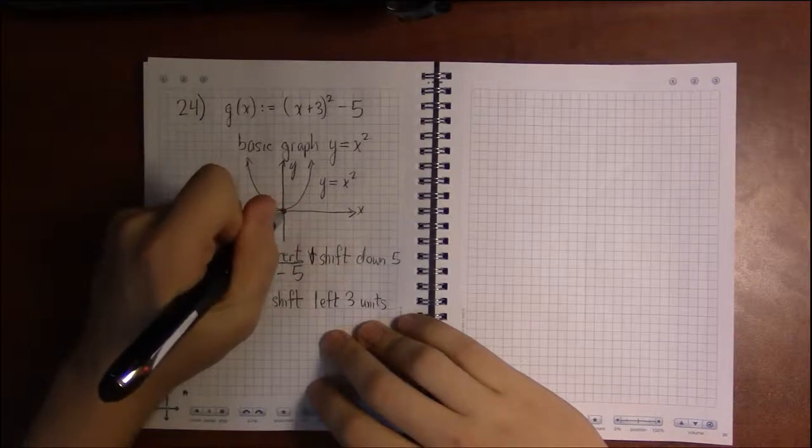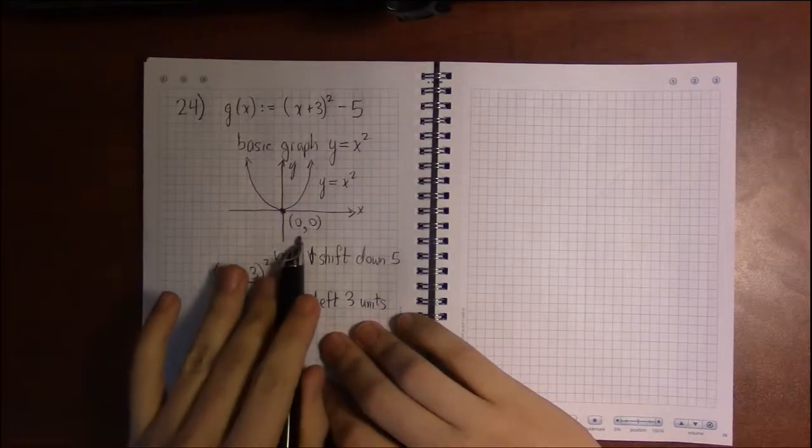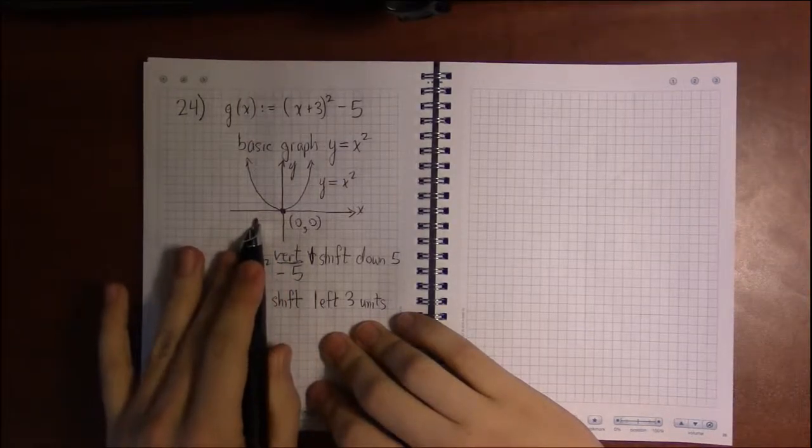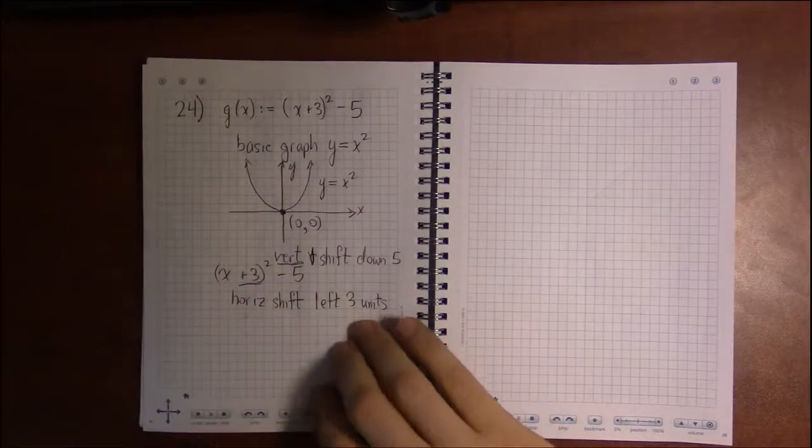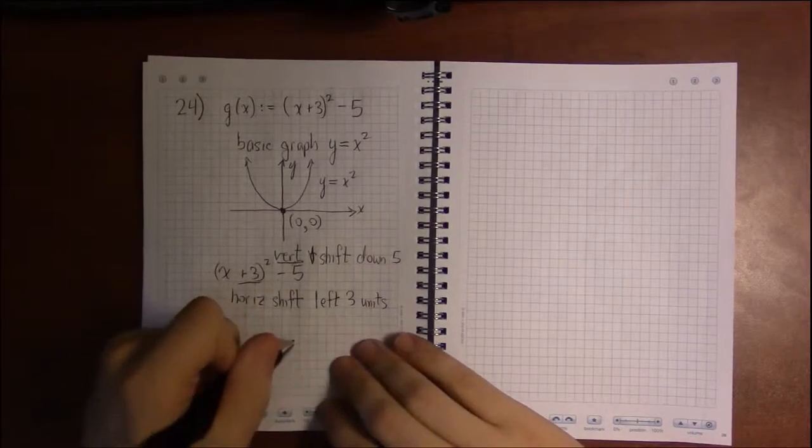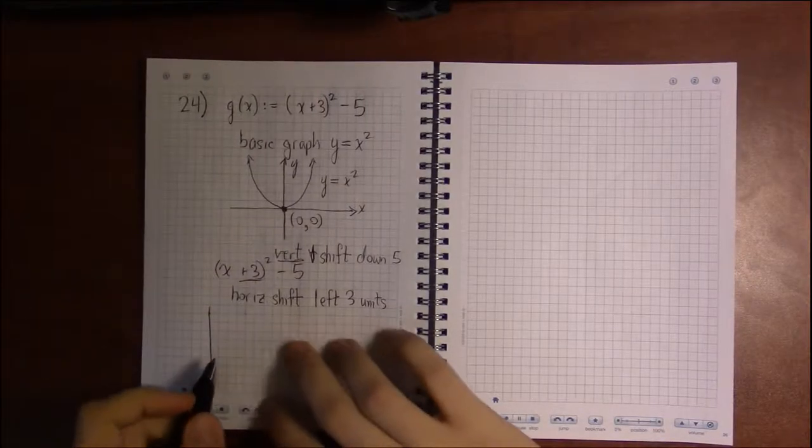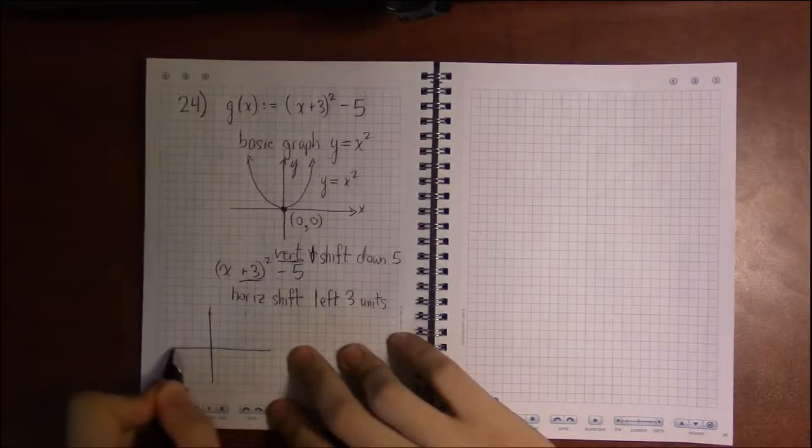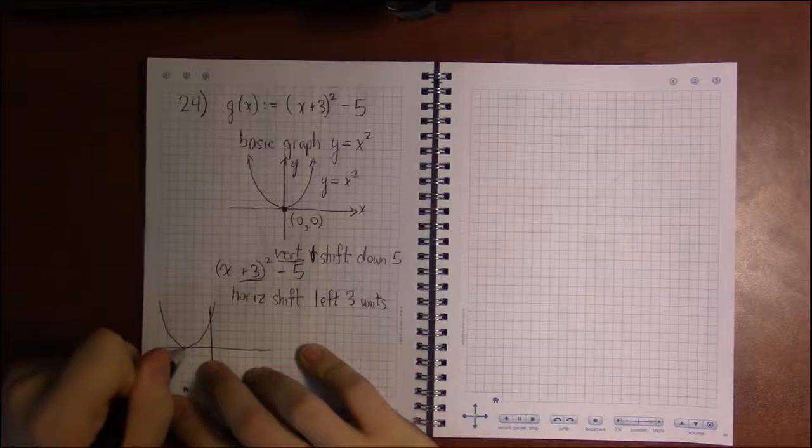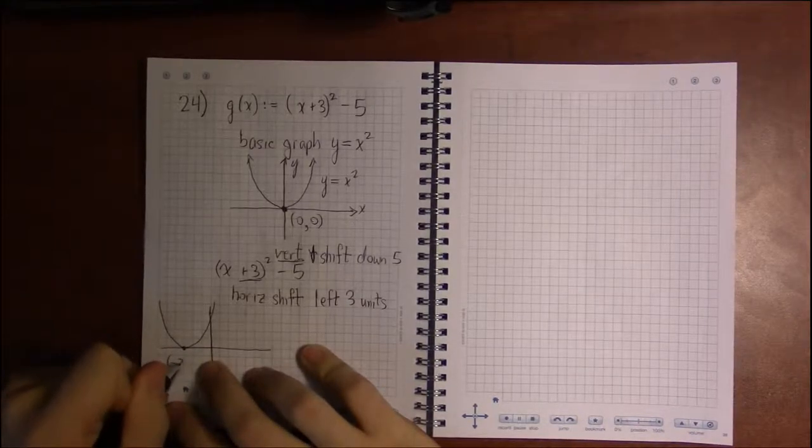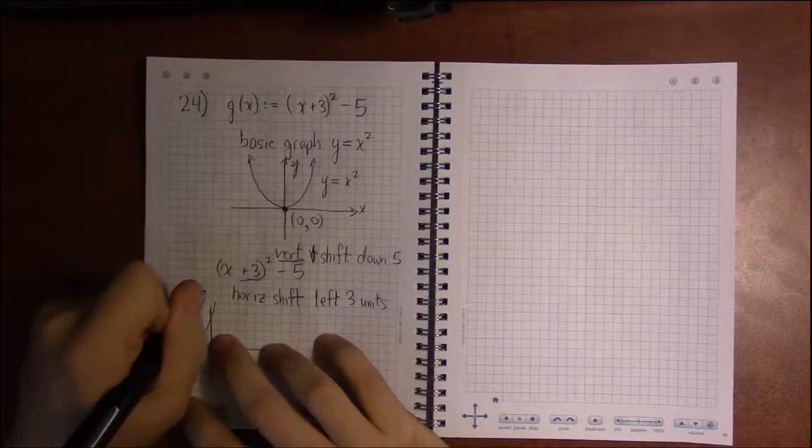So g of x is going to be this graph, but it's going to be left 3 down 5. We've got this point here at 0, 0. We have to move this point 3 to the left, and 5 down. That's where the parabola will sit. And if you want, you can do these one at a time. We can start with shifting left 3.